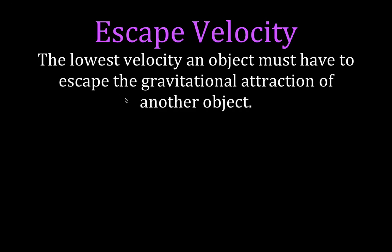It's really the lowest initial velocity — we're going to take something and project it, apply a force to it, and give it some initial velocity, like when we kick something or shoot something or launch a rocket up into the air. What's the lowest velocity it could have initially at the surface of the Earth and still escape the gravitational attraction of the Earth? To come up with this, we are going to use the idea of conservation of energy — the conservation of total mechanical energy.